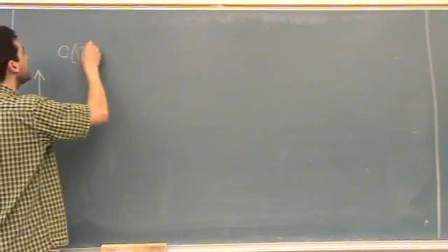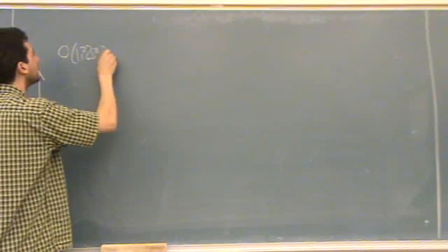In class, we did it for carbon. Carbon is 1s2, 2s2, 2p2. That's its electron configuration.